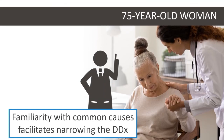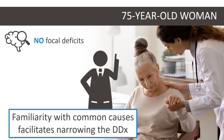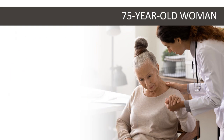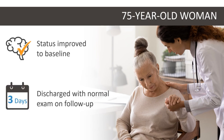Becoming familiar with the most common causes of encephalopathy based on time course of symptoms facilitates narrowing the differential diagnosis. The patient in our case presented with acute encephalopathy and had no focal neurological deficits. A urinalysis revealed hazy urine with positive nitrites and 20 white blood cells per HPF, so she was started on appropriate antibiotics. After treatment for her urinary tract infection, her mental status improved back to baseline, and she was discharged three days later with a subsequent normal exam on follow-up.